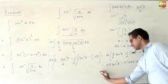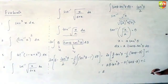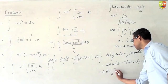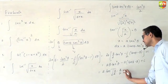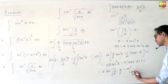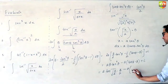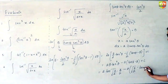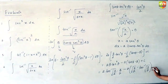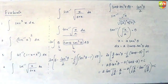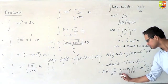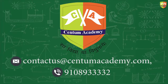Now substituting θ back: θ is tan⁻¹(√x / a), tan²θ equals x/a, and tan θ equals √x / a. So the final answer becomes A·tan⁻¹(√x/a)·(x/a) minus A·(√x/a) minus A·tan⁻¹(√x/a) plus C. You may want to cancel the A factors where possible.